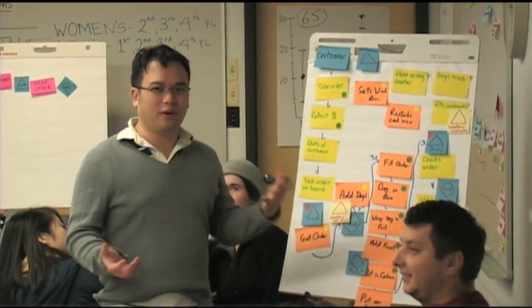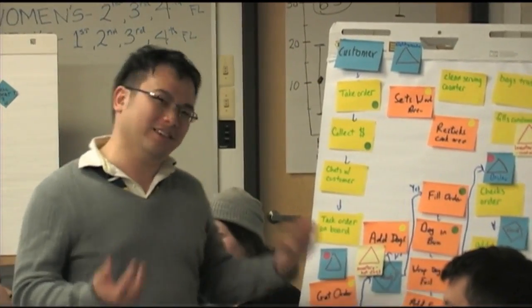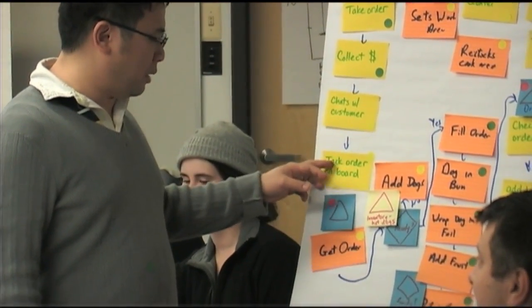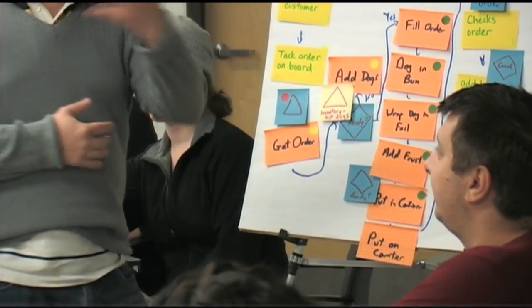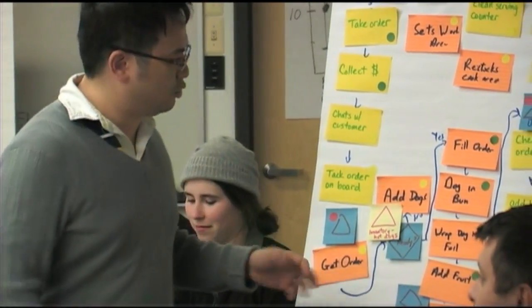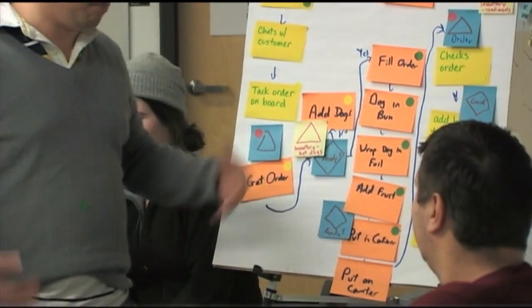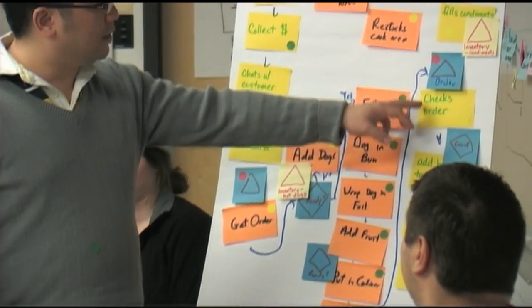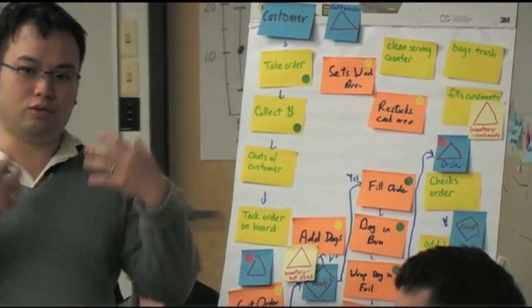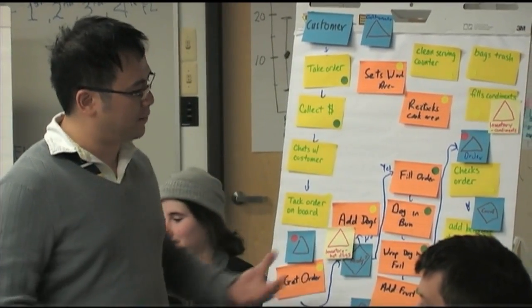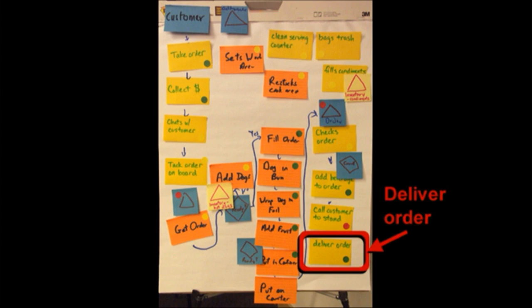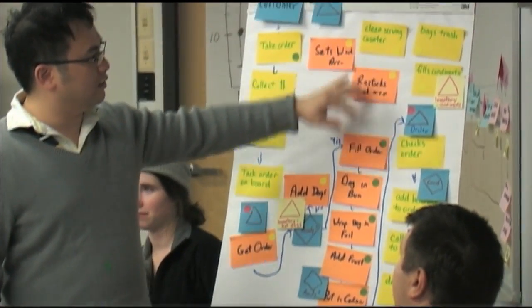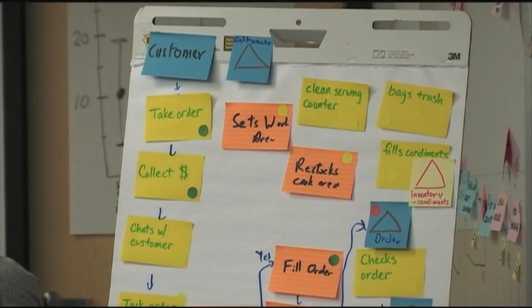Chatting with the customer — we figured it's not essential, but people expect it to happen; if it doesn't happen, they'll be unhappy. Typing an order on the board and getting the order — we thought it was yellow. Waiting was obviously not value-added. The decision of when to add docs again doesn't add value to the customer, but if it needs to be done, it needs to be done. Filling the order all the way through was quite straightforward — that adds value. Checking the order: it doesn't add value to me as the customer, but if it's not done and I get a wrong order, I'll be very unhappy. Adding a beverage adds value. Calling the customer to stand — ideally the customer would just have been there, so that's a waste. Delivering the order obviously adds value. Setting up the work area, cleaning the surface — those are all between regulatory requirements and necessary waste.